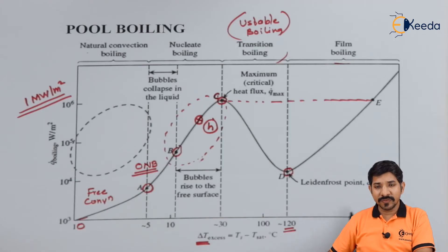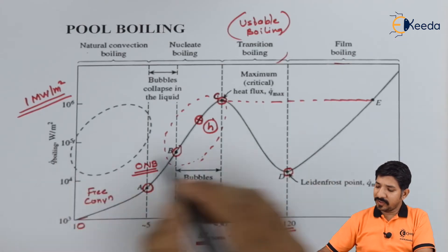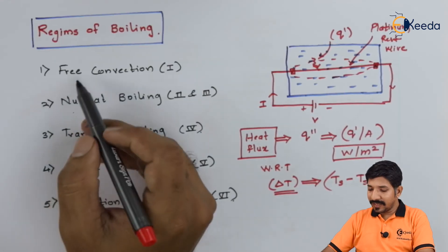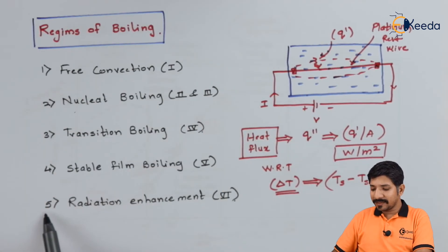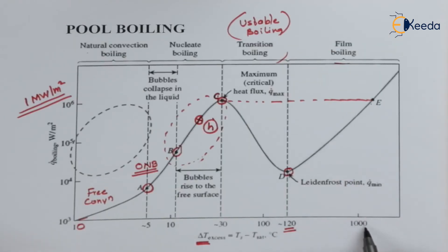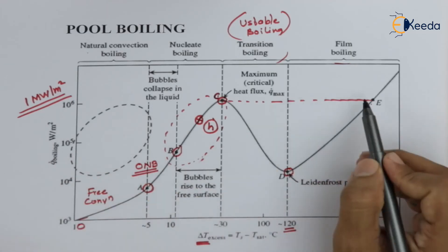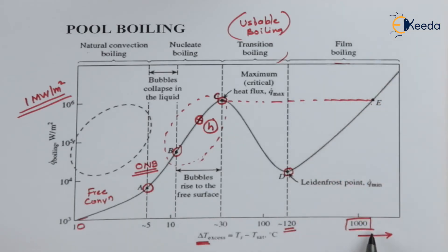Due to the increased heat transfer by vapor, the value of Q will again start increasing. These were the four stages: natural convection, nucleate boiling, transition boiling, and stable film boiling. The last stage is radiation enhancement. Once ΔT reaches around 1000, any further increase in ΔT will enhance the heat transfer rate by radiation, and Q will keep on increasing. After this ΔT value, the role of conduction and convection decreases — radiation becomes more dominant.